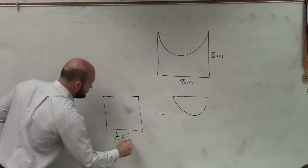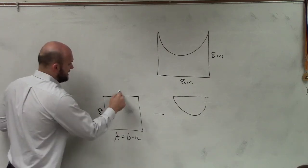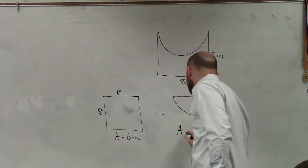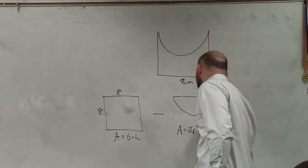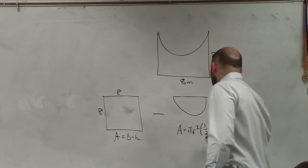The area of the square equals base times height, which is 8 and 8. And then here, we have an area of a circle, but it's a half circle. So area equals πr², but we're only doing half of a circle, so I'm going to multiply that by 1/2.